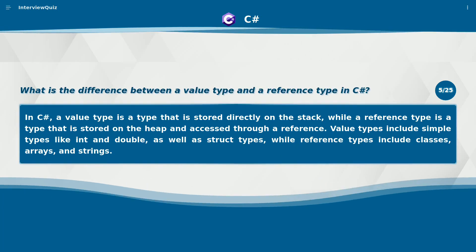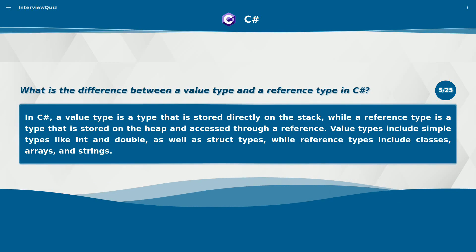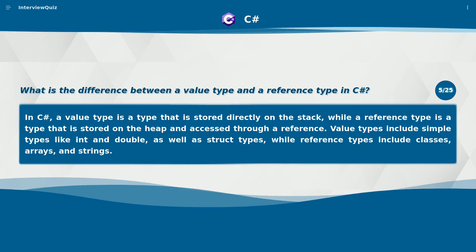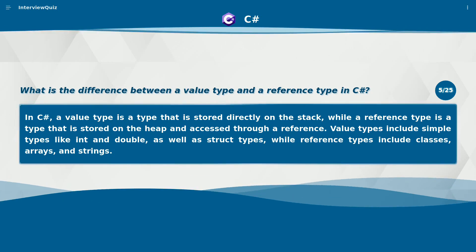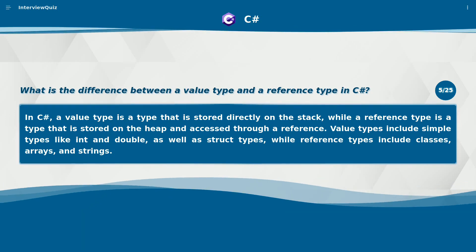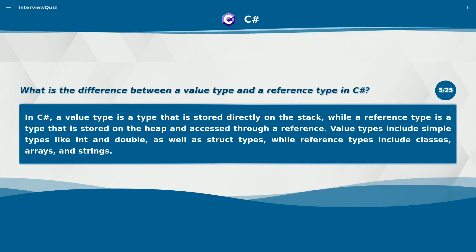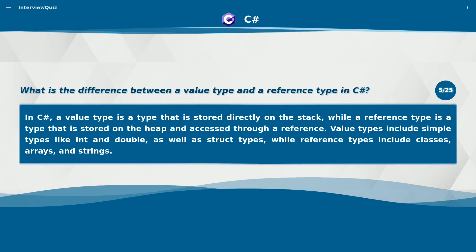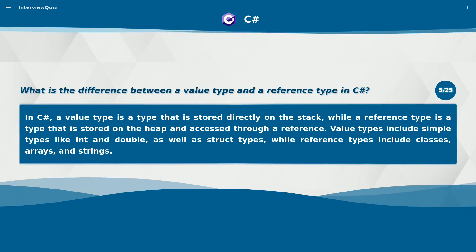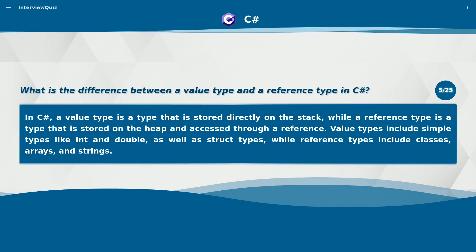What is the difference between a value type and a reference type in C#? In C#, a value type is a type that is stored directly on the stack, while a reference type is a type that is stored on the heap and accessed through a reference. Value types include simple types like int and double, as well as struct types, while reference types include classes, arrays, and strings.